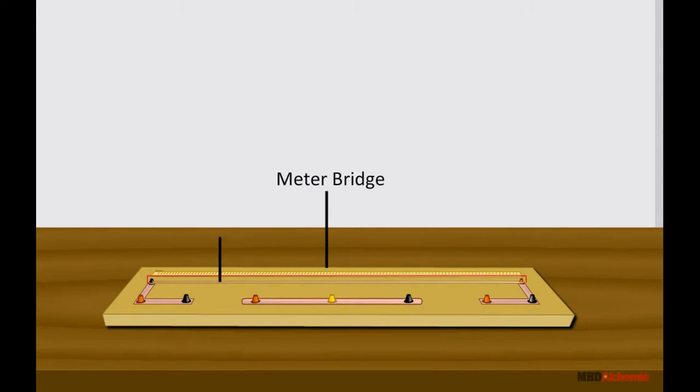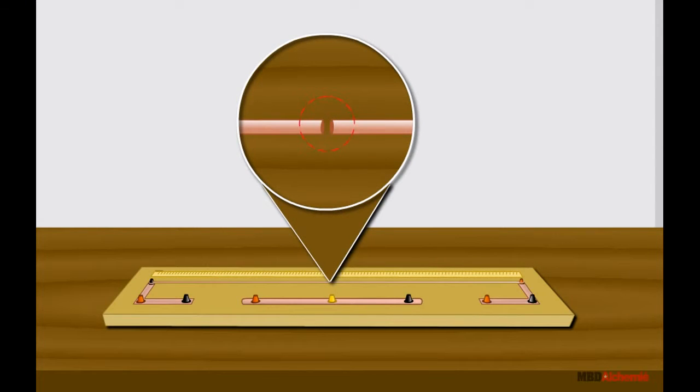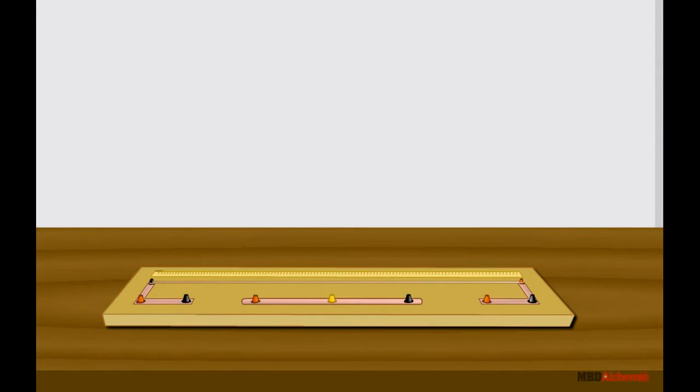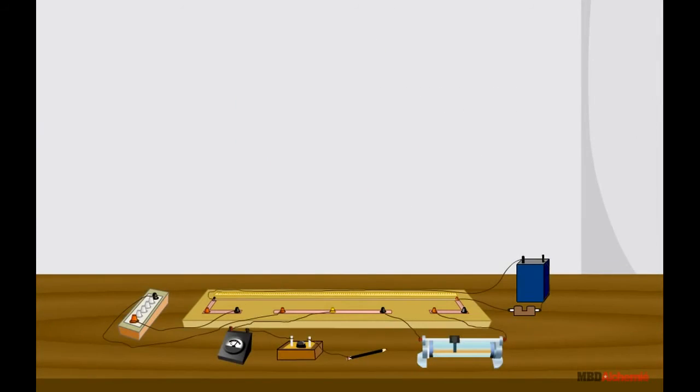It consists of a wire of constantan and manganin having length 1 meter, with uniform area of cross section mounted on a wooden board. It is stretched and clamped between two thick metallic strips bent at right angles.